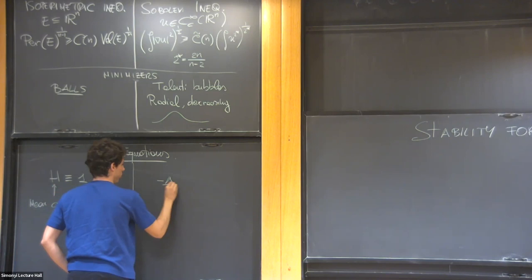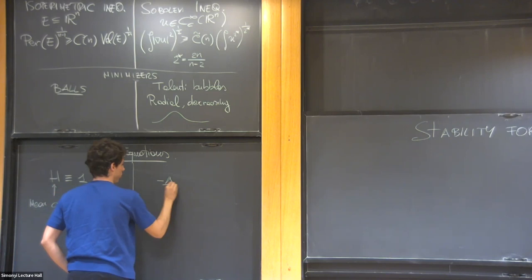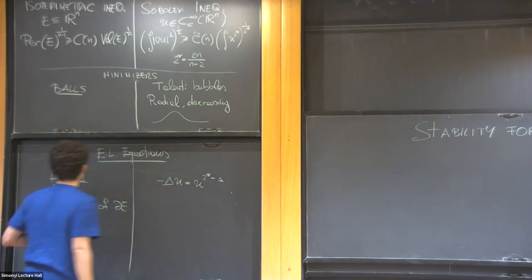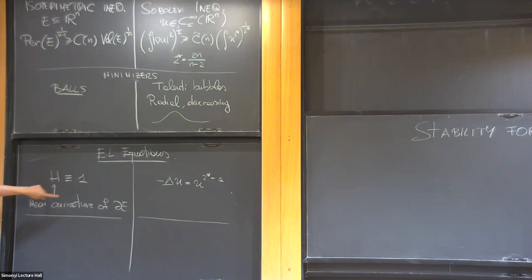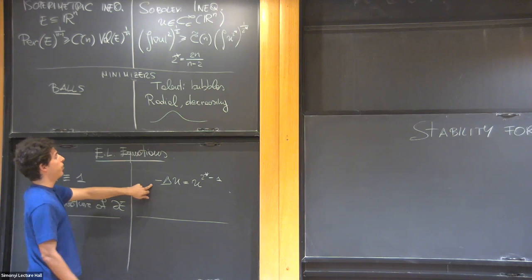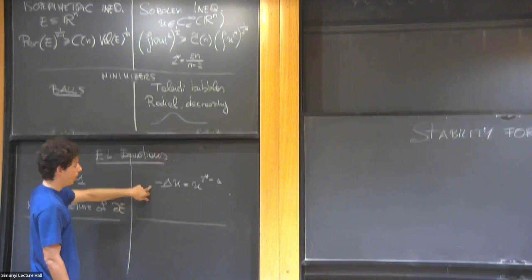Similarly here, you get a critical elliptic equation. So I've said that the minimizers are classified. In fact, even critical points are classified under some restrictions. But these are technical and let's keep them. So here, once again, you get that the only solutions are balls. And here, if you restrict to positive functions, you get that the only critical points or solutions of this critical elliptic equation are Talenti bubbles.